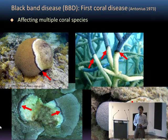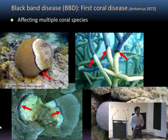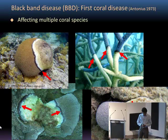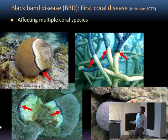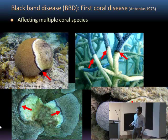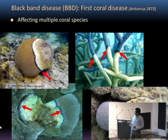I've been focusing on black band disease. This is the first coral disease that has appeared in literature. As you can see, it affects many morphologies of corals. Typically, this black band disease makes a black band which is made up of a polymicrobial community, and that eats coral tissue very rapidly and then moves forward as it kills corals.